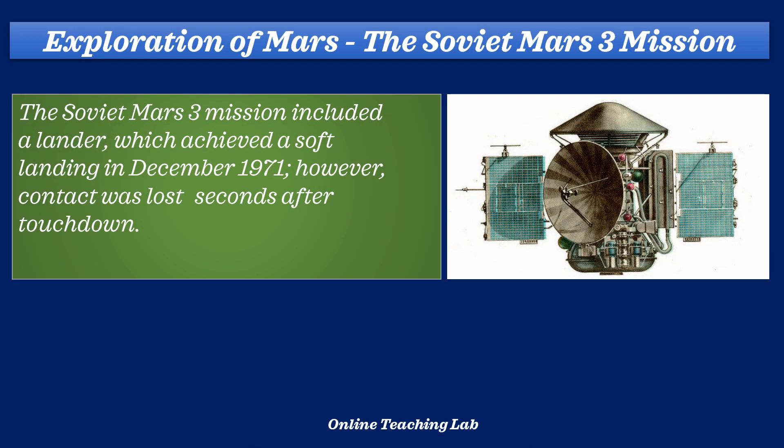The Soviet Mars 3 mission included a lander, which achieved a soft landing in December 1971. However, contact was lost seconds after touchdown.